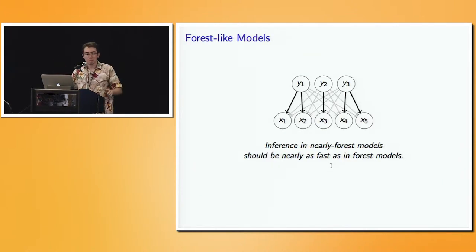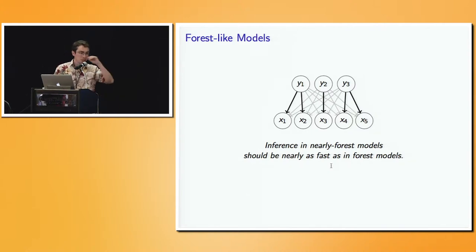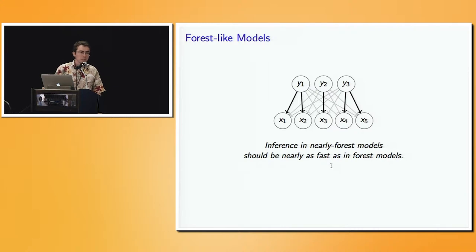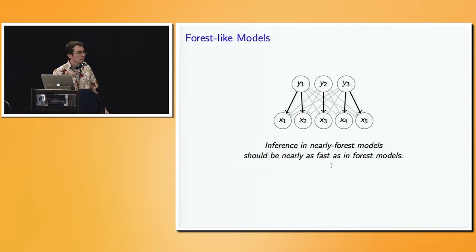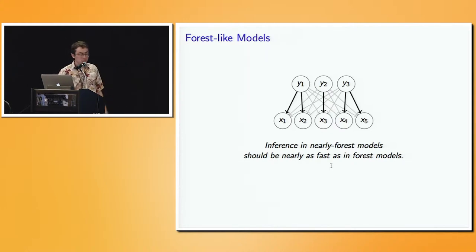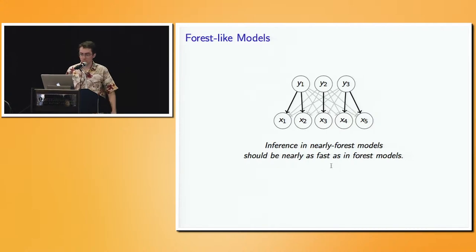This is a frustrating model — a graphical model which is almost forest-like. I have a forest of strong dependencies (the black arrows), but I also have a bunch of weak dependencies which ruins the nice graphical structure. I can't switch the maximum with the sum anymore, so I can't do parallel inference. But the question is: do I have to resort to the slow serial coordinate algorithm? It's really frustrating because we expect that inference in nearly-forest models should be nearly as fast as in forest models.